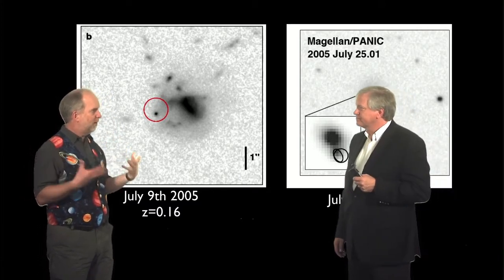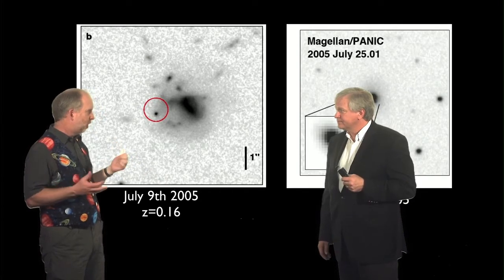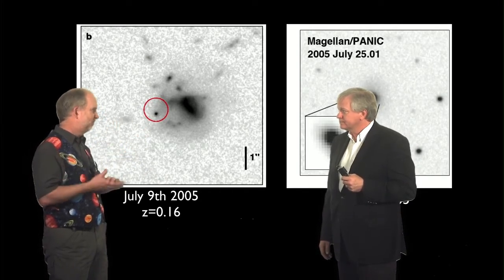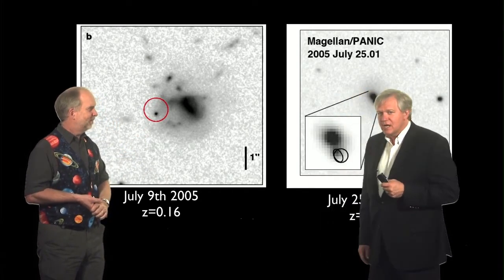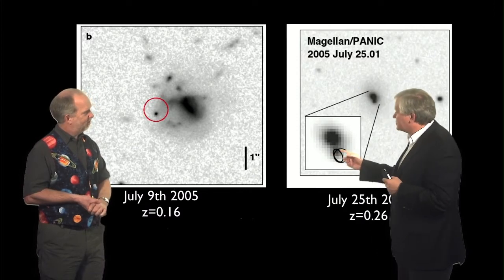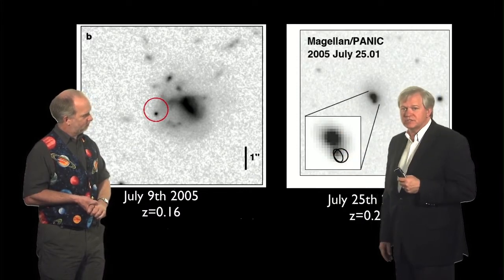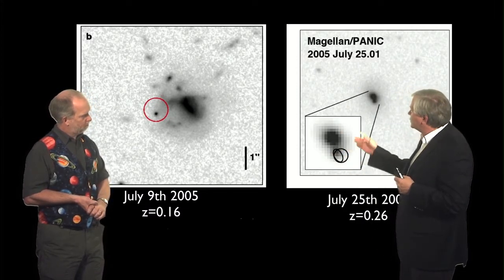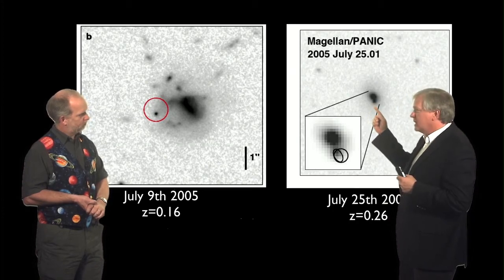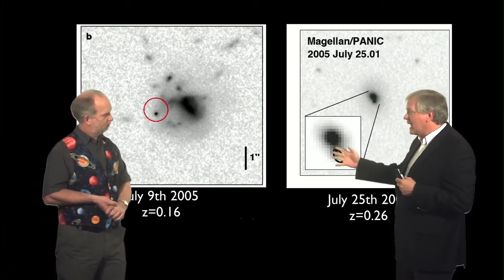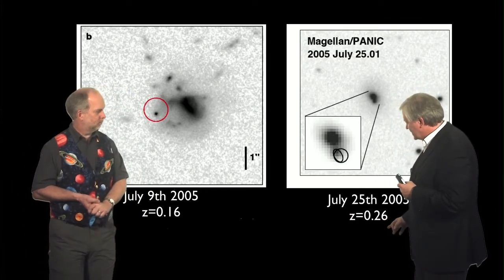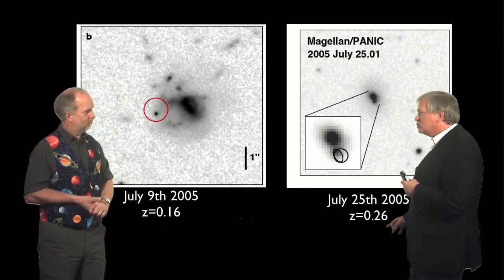So it could have been a supernova. Star-forming galaxies do have the massive stars, but if it was a supernova it would have stayed bright for weeks, not just minutes. Exactly. And then three weeks later another Swift short hard burst was detected, and this one again in an elliptical galaxy, and you can see again a short flash that faded away quickly, and this one was again at that redshift of 0.26.